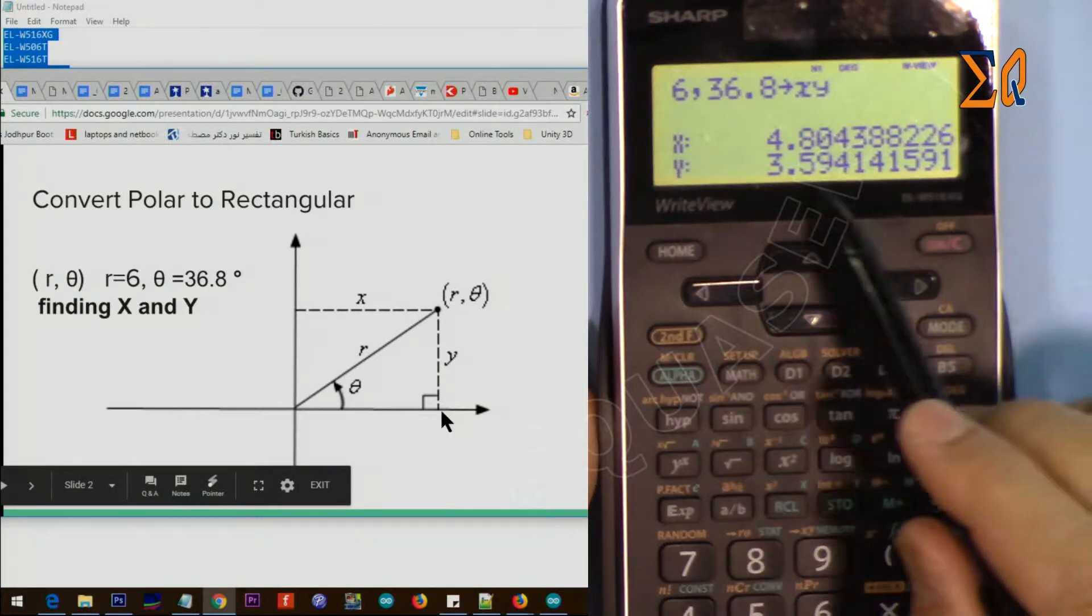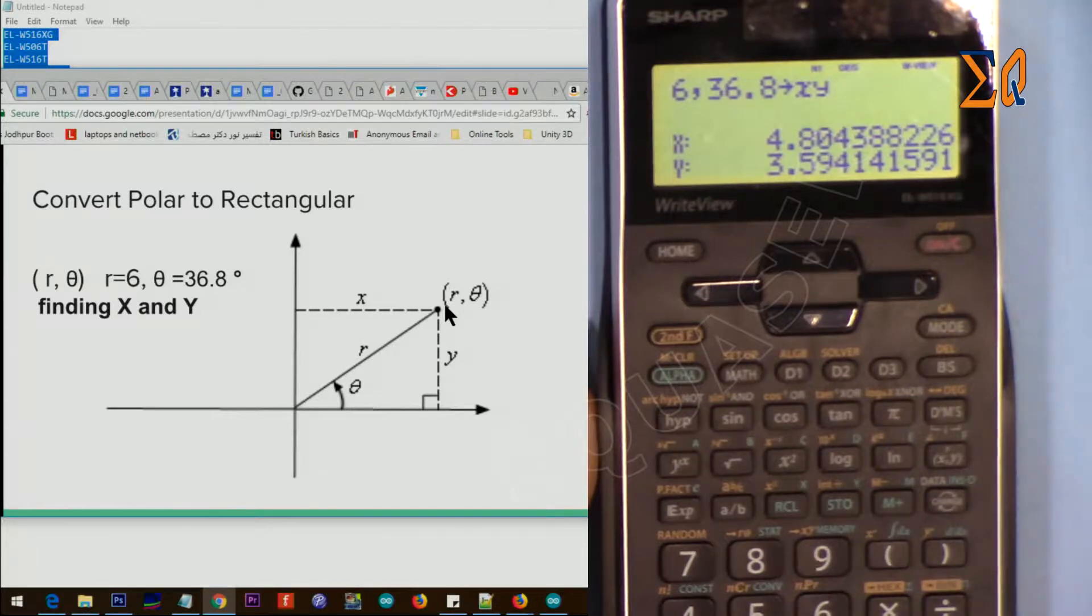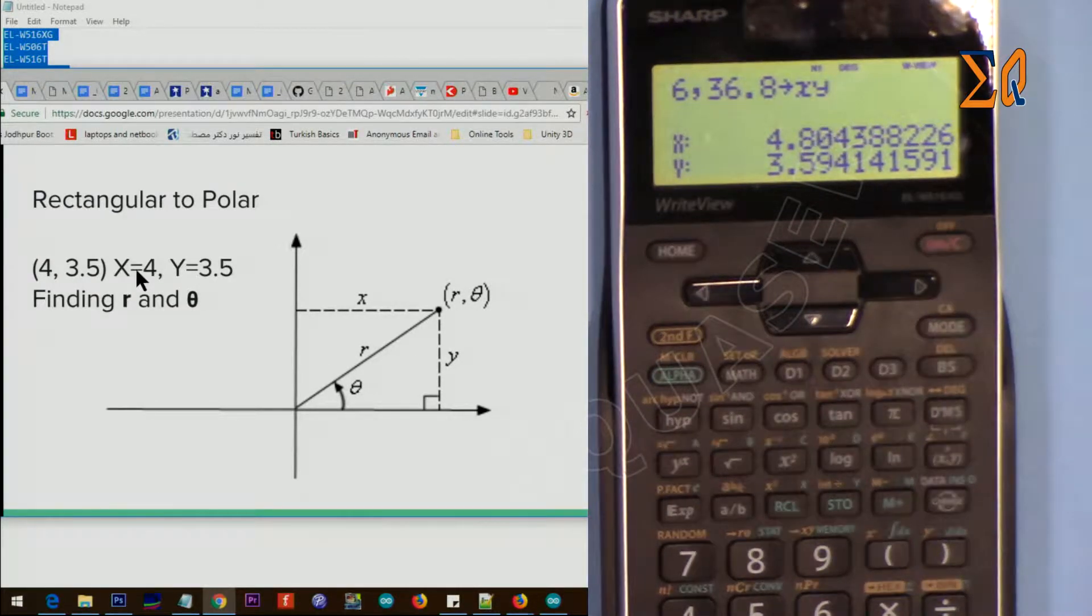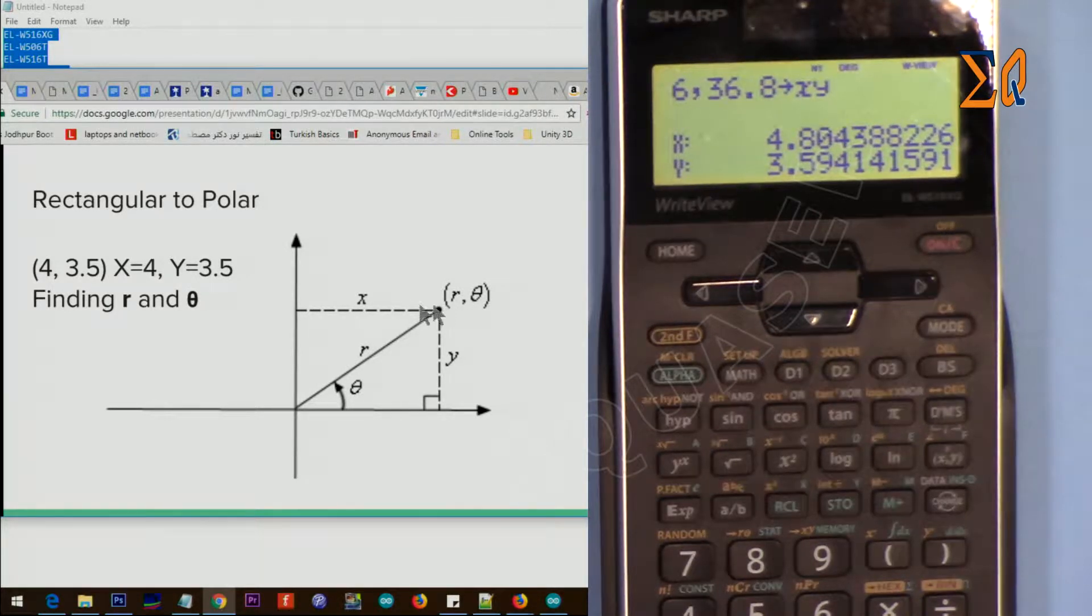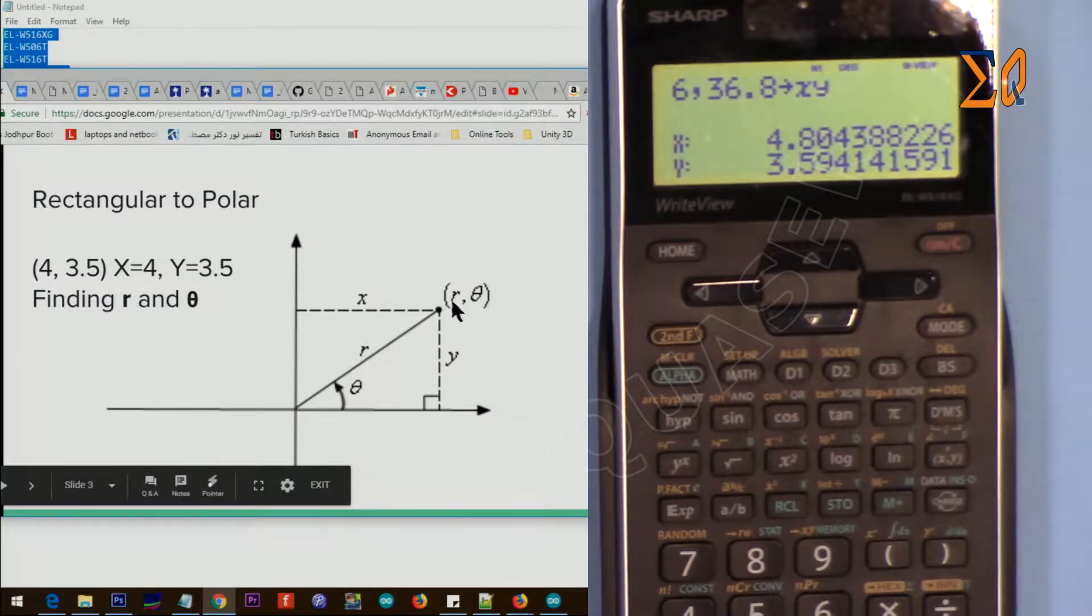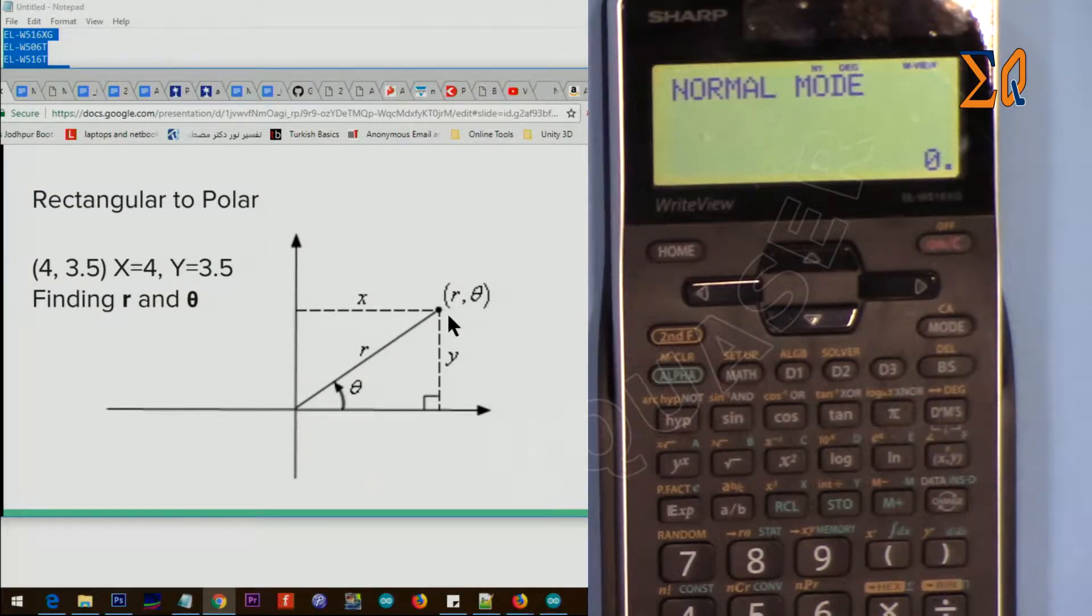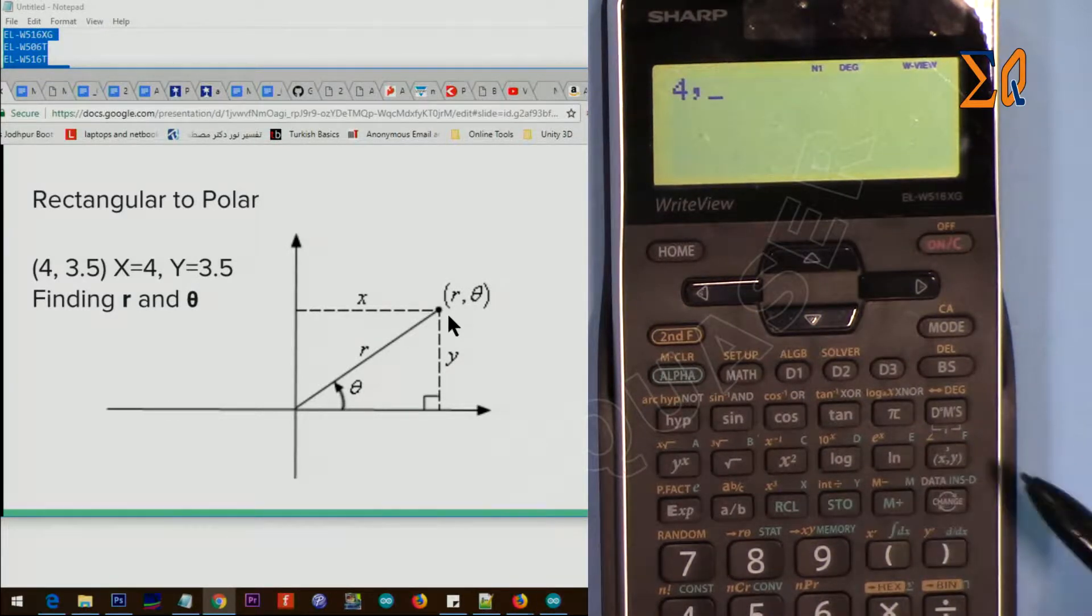Once you press it, it shows that X is 4.8. This way, the distance from here to here is 4.8, and Y is 3.5. So this point is 4.8 and 3.59. Now we have X is 4 and Y is... Now this is the same, let's say the same point or the same quadrant. X is 4 and this is 3.5.